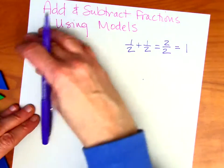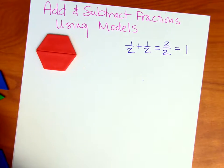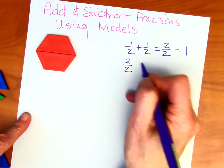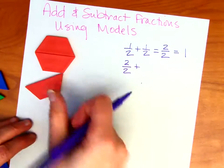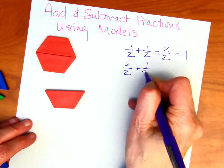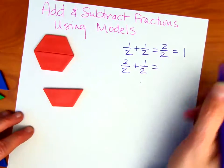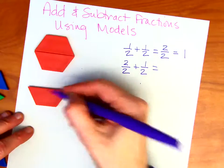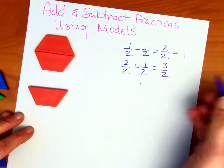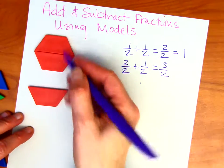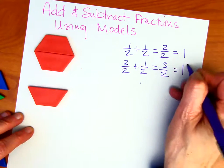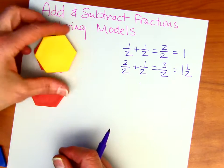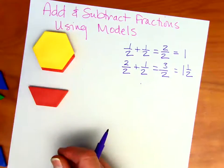Now what if we had two halves and we're going to add to that one more half — one-half. Two halves plus one-half, that's going to be three halves — one, two, three — so three halves. And we of course know that's one and one-half because we could substitute these two halves for one, and this would be one and one-half.